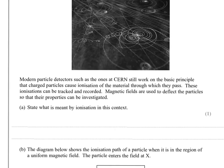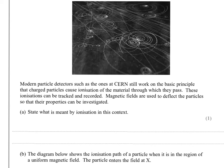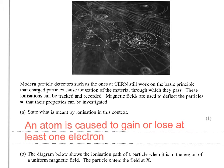So state what is meant by ionization in this context. Remember ionization is when something happens to an atom and it becomes an ion. So that's either the gain or loss of electrons. So I'm saying that an atom is caused to either gain or lose at least one electron.